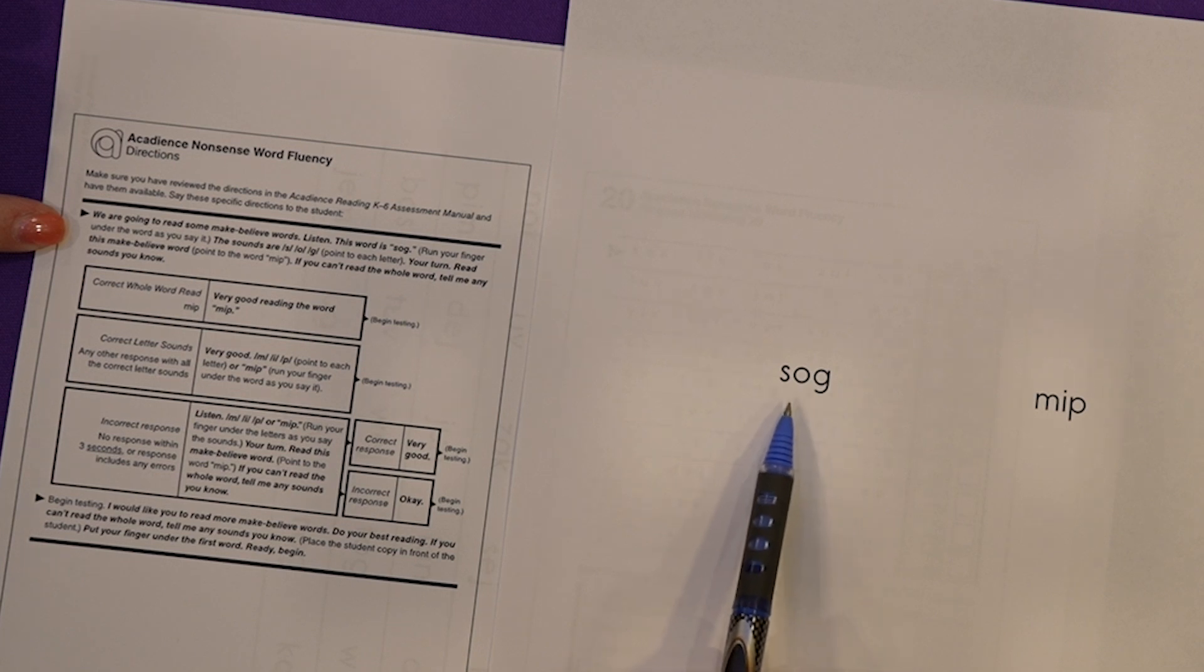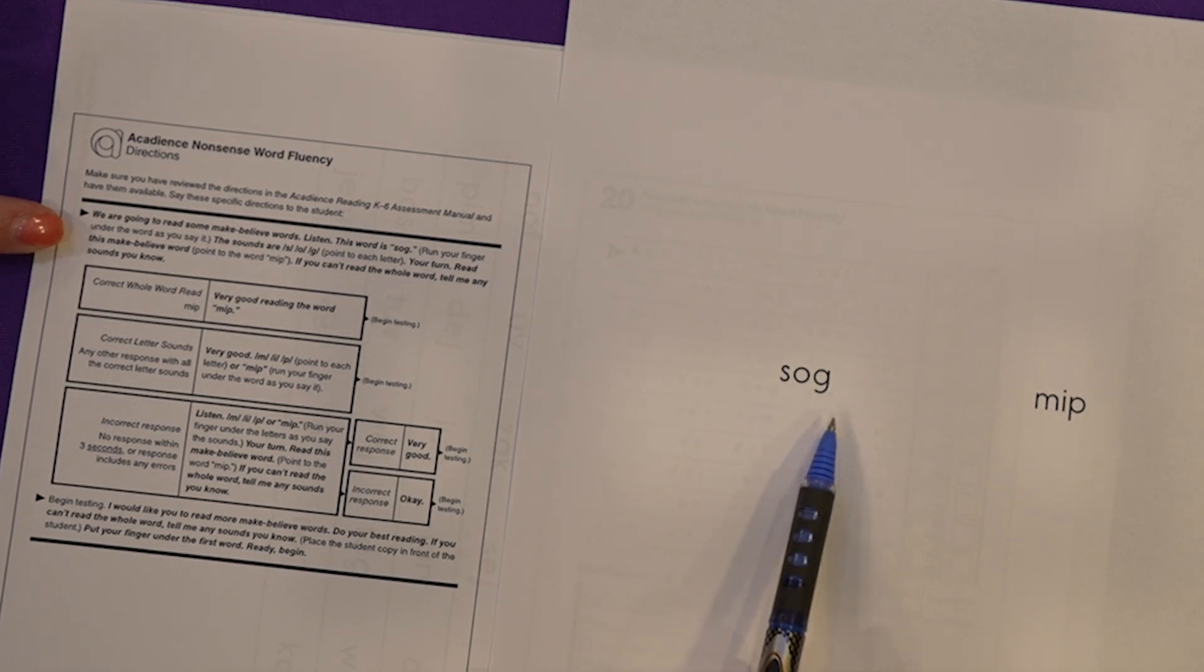We're going to read some make-believe words. Listen, this word is SOG. The sounds are S-O-G. Your turn. Read this make-believe word. If you can't read the whole word tell me any sounds you know.